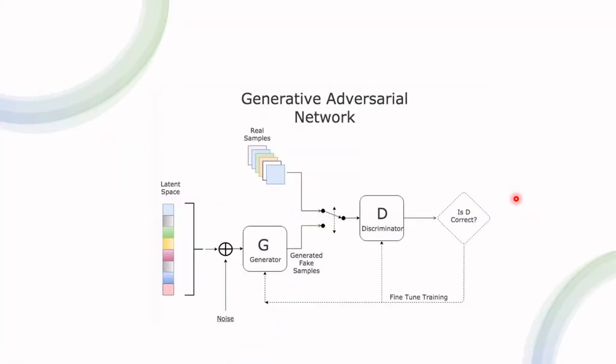So GANs are comprised of two different components, the discriminator and the generator. What the generator does is it takes noise as input and then it generates a fake sample. Let's say we're talking about images, so a generator generates a fake image.